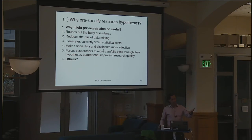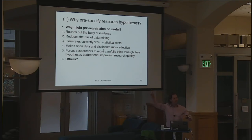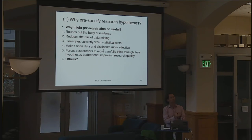In the grant process, we're already writing proposals and laying out our hypotheses. In some sense, we already have these plans, but they're very rarely shared with the research community — they're proprietary. Grant-making organizations don't publish them typically unless they're funded. The big difference is they're not searchable by the research community. We're making them, but we're not putting them in a place where everybody can find them. A registry makes them findable.